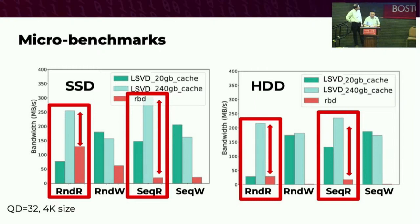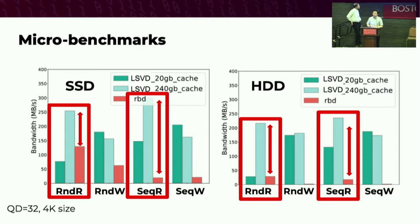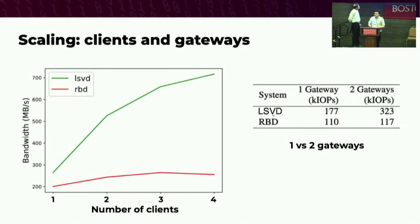For reads, the primary thing we're looking for is that we're not any worse. For completely random reads with a cache that's not sufficient to hold the image size, that's the only time we're worse than RBD—the main reason being cache thrashing. We have a newer optimization that detects this and automatically bypasses the cache when we detect that the workload is too random for a cache to be of any use. But in all other cases, we do essentially on par with RBD as in the hard disk case, or much better when we have any amount of cache locality.